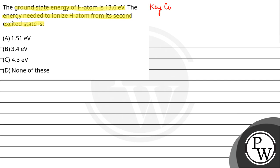So here our key concept is energy of electron in nth orbit of an atom is given by the relation En equals minus 13.6 upon n square into z square electron volt.